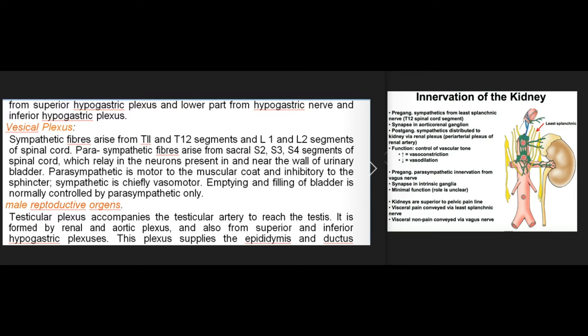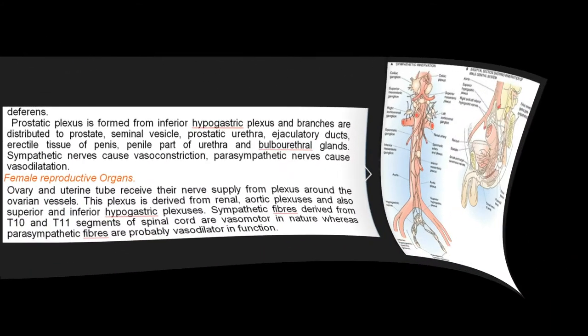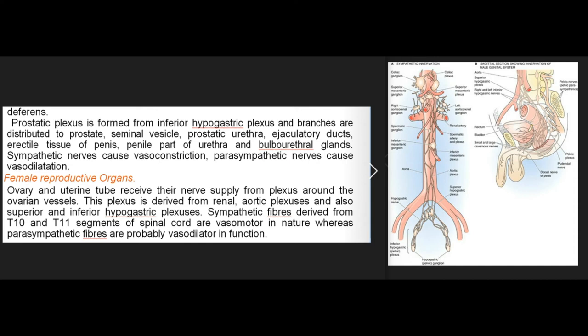Male reproductive organs: the testicular plexus accompanies the testicular artery and is formed by the renal and aortic plexus and also from the superior and inferior hypogastric plexuses, supplying the epididymis and ductus deferens. The prostatic plexus is formed from the inferior hypogastric plexus; branches are distributed to the prostate, seminal vesicle, prostatic urethra, ejaculatory ducts, erectile tissue of the penis, penile urethra, and bulbourethral glands. Sympathetic nerves cause vasoconstriction.